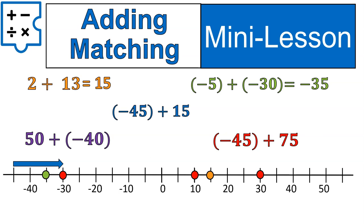Negative 45 plus 15 is shown here in the blue arrow. We start at negative 45, we add 15 — that will bring us up to negative 30. We're adding a negative plus a positive, but there's still more negatives, so it's staying on that left side of zero.